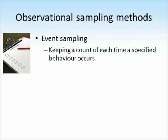One sampling method is called event sampling. What we would do here is keep a count each time a specified behaviour occurs. So we might have a checklist of behaviours that we're looking for. In the aggression example, we could have kicking, punching, and biting on our checklist. Every time we see that child carrying out one of those behaviours, we keep a tally of it. So that's event sampling.